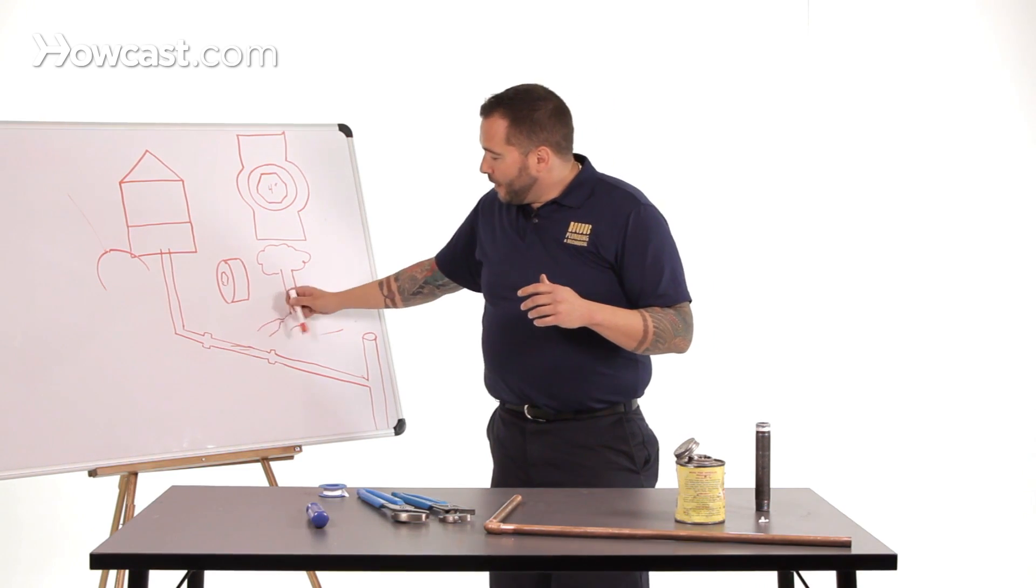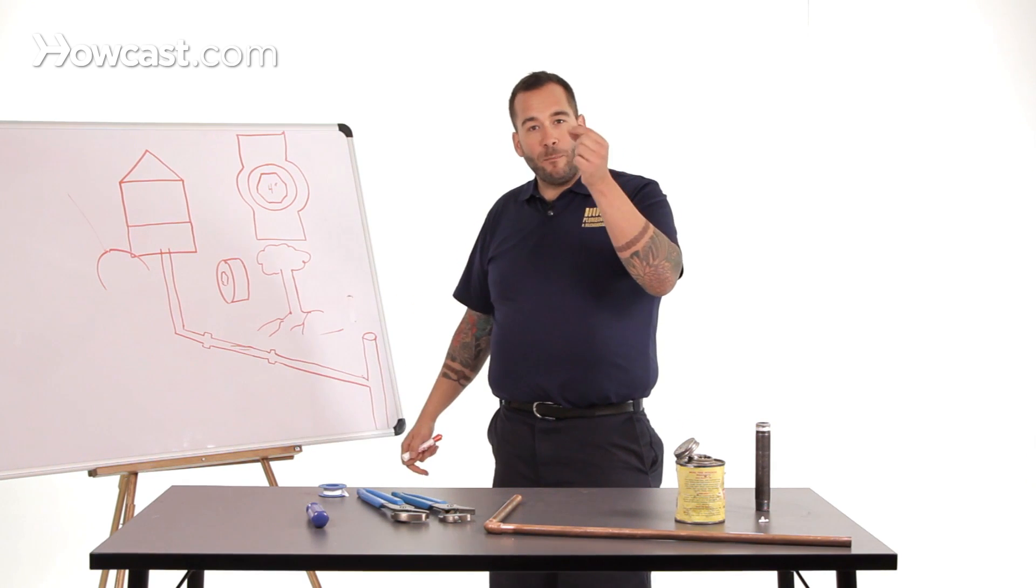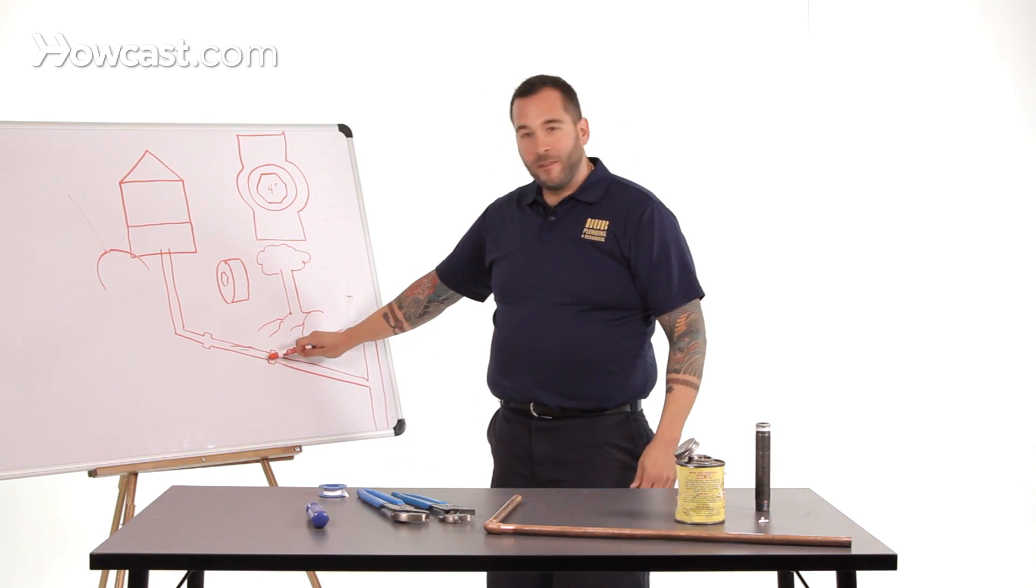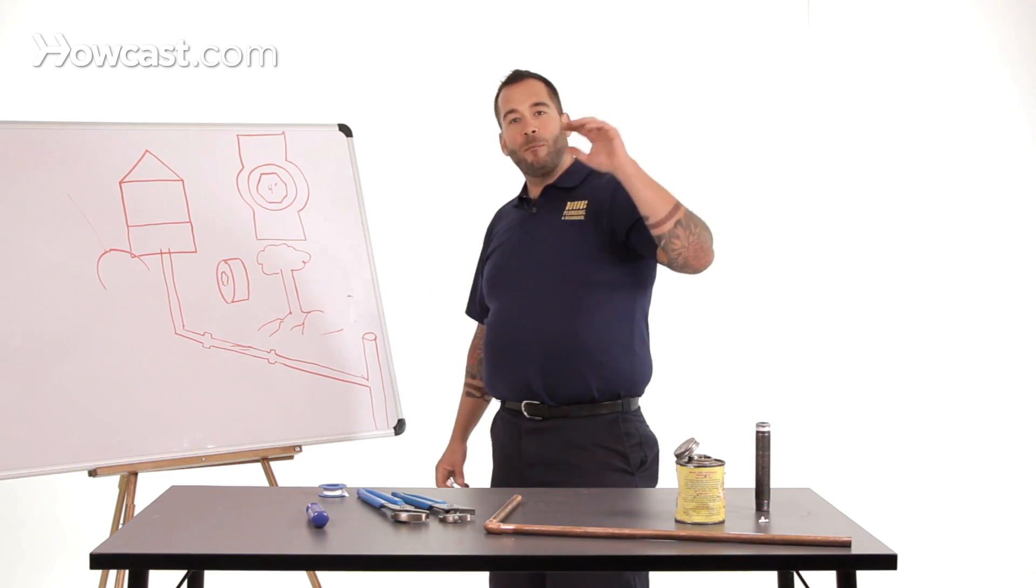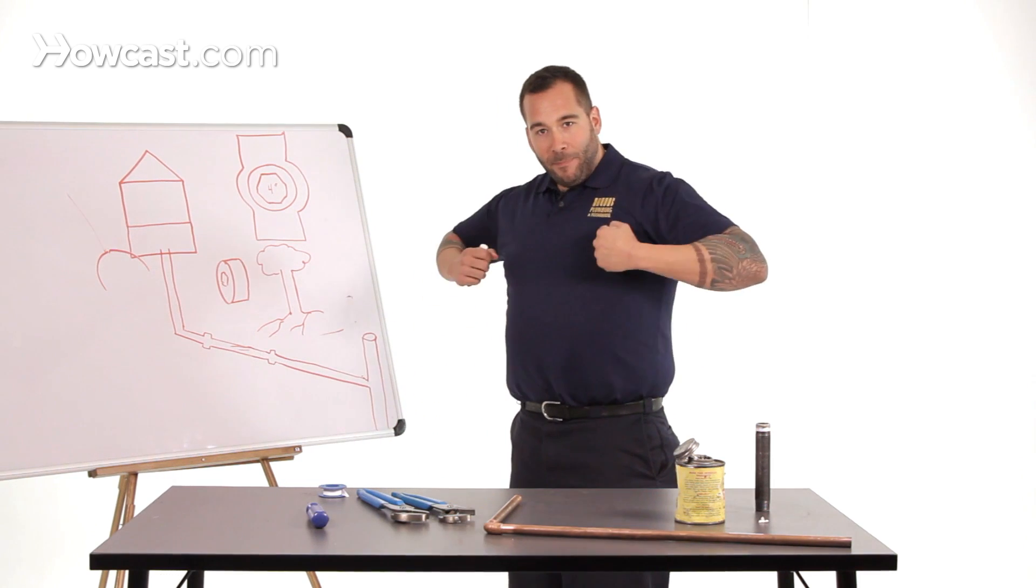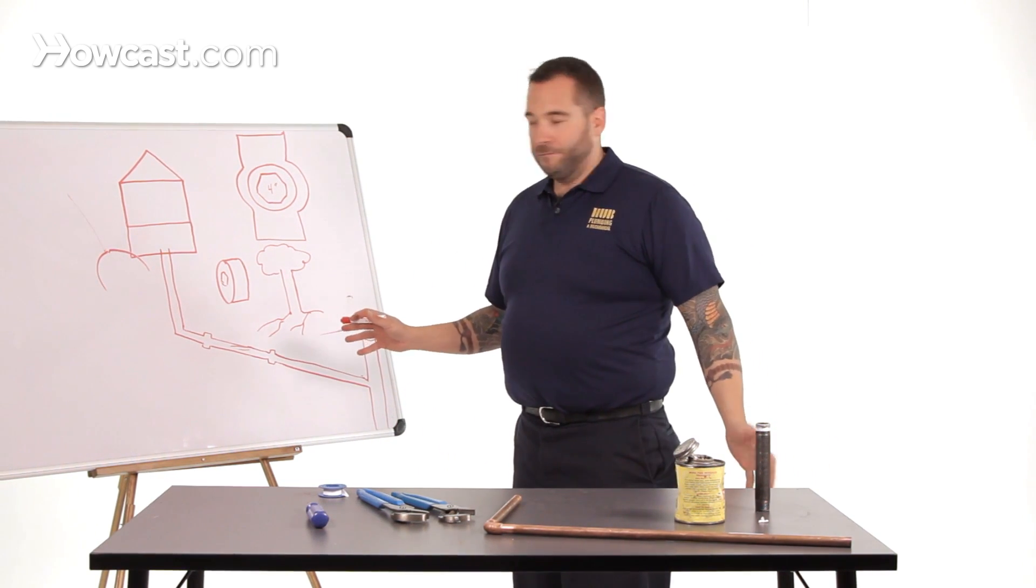And when the root, a little tiny tendril of a root, the width of a pen, gets inside this joint and finds that water in there over two years, it can grow to the width of a man's leg, bust the pipe out from the inside, and cause all hell.